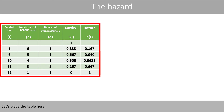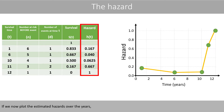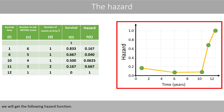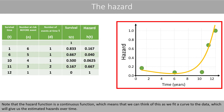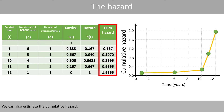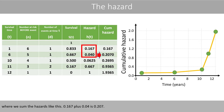Let's place the table here. If we now plot the estimated hazards over the years, we will get the following hazard function. Note that the hazard function is a continuous function, which means we can think of this as fitting a curve to the data, giving us the estimated hazards over time. We can also estimate the cumulative hazard by summing the hazards: 0.167 plus 0.04 is 0.207. If we add 0.0625 to the previous sum, we get 0.2695, and so forth.